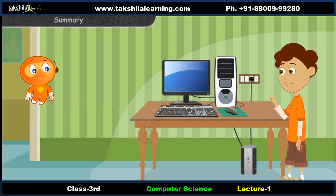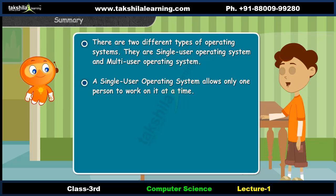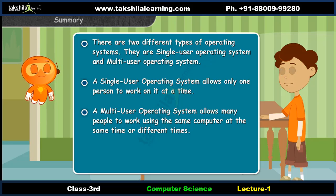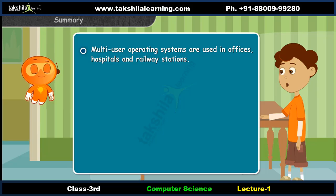Thanks Jen. Now I know about the operating system. There are two different types of operating systems: single user operating system and multi user operating system. A single user operating system allows only one person to work on it at a time. A multi user operating system allows many people to work using the same computer at the same time or different times. In a multi user operating system, a main computer is attached to many other computers — it is called the mother computer. Multi user operating systems are used in offices, hospitals, and railway stations.